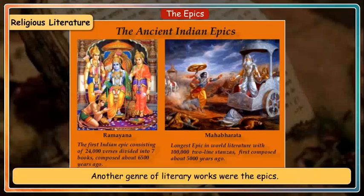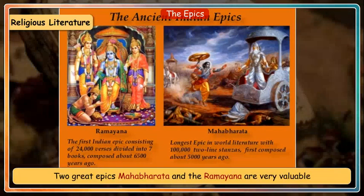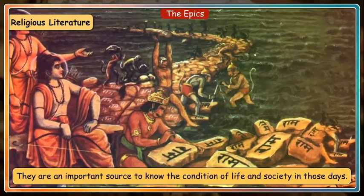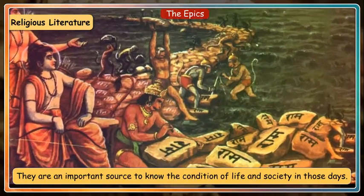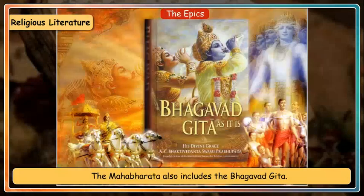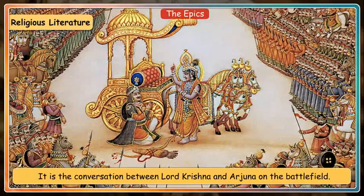Another genre of literary works were the epics. An epic is a long story written in verse form. Two great epics, the Mahabharata and the Ramayana, are very valuable because they continue to influence life even in the present times. They are an important source to know the condition of life and society in those days, giving vivid accounts of the extent of empires and relations and battles among kingdoms. The Mahabharata also includes the Bhagavad Gita, in the form of a conversation between Lord Krishna and Arjuna on the battlefield.